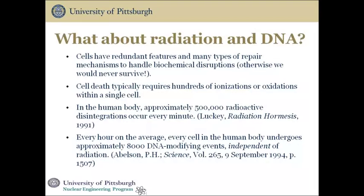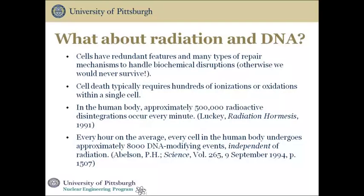According to Lucky in his book Radiation Hormesis, in the human body 500,000 radioactive disintegrations occur every minute. The human body gives off over 6,000 gamma rays every minute that are more energetic than the gamma rays given off by Cobalt-60. If your body were not able to accommodate half a million disintegrations each minute, you would not be alive. Cell damage due to low levels of radiation is repaired on a regular basis; if the cell is not properly repaired, it's replaced. According to Ableton, every hour on average, every cell in the human body undergoes approximately 8,000 DNA-modifying events independent of radiation.